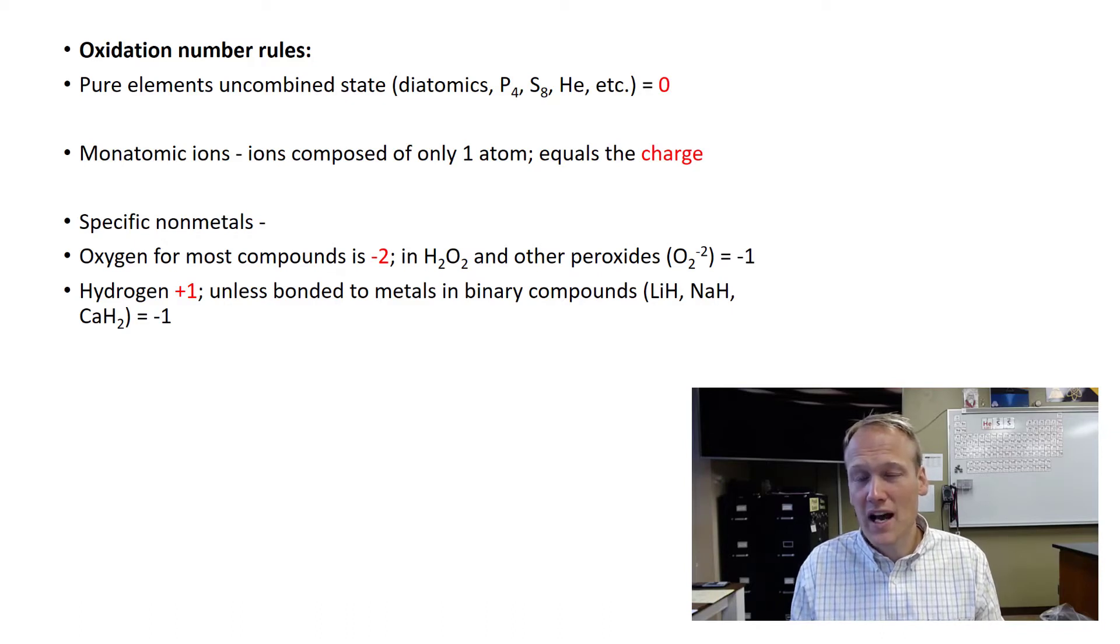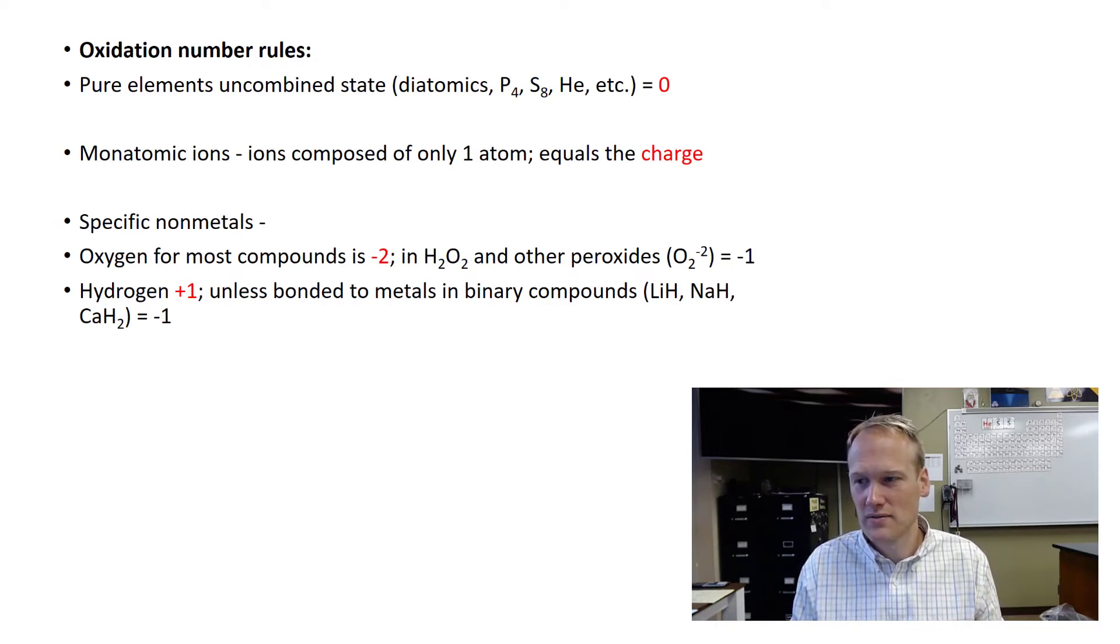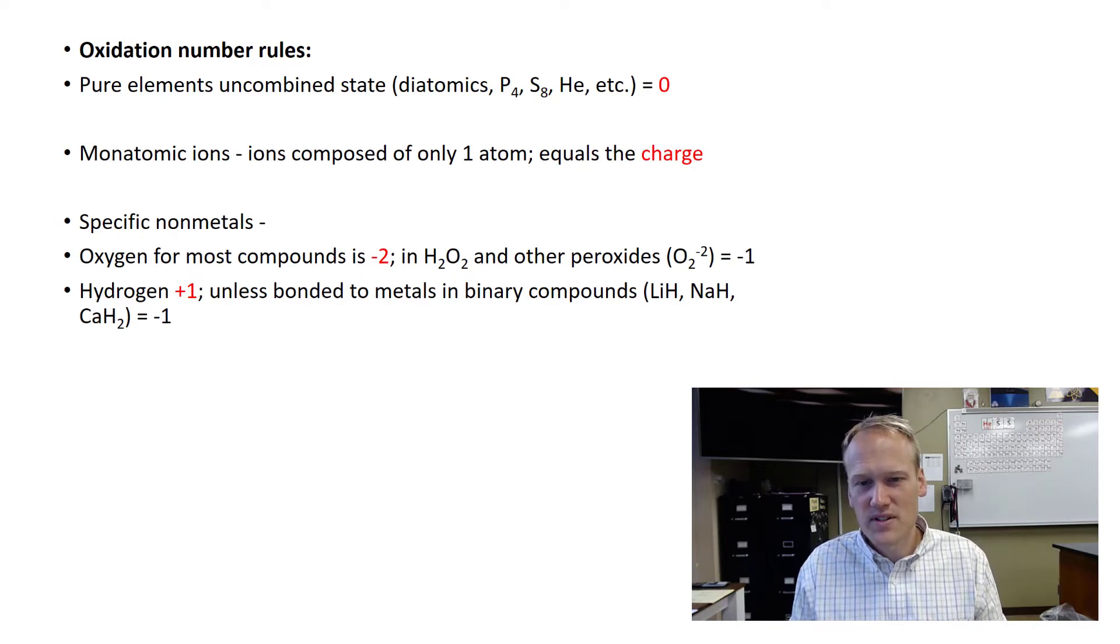Hydrogen is typically a plus one. But there are certain times when hydrogen actually will gain electrons, and it will act as an anion. In those cases, hydrogen's charge is a minus one. We call these metal hydrides. You can see some examples here, and you can see that the hydrogen is in the anion position.